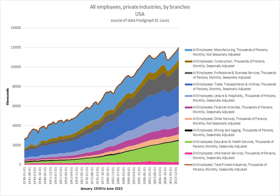Full-time or part-time contracts have no defined length of time, can be terminated by either party, is to accomplish a specific task, specified number of hours. Agency staff, freelancers, consultants and contractors are additional categories.